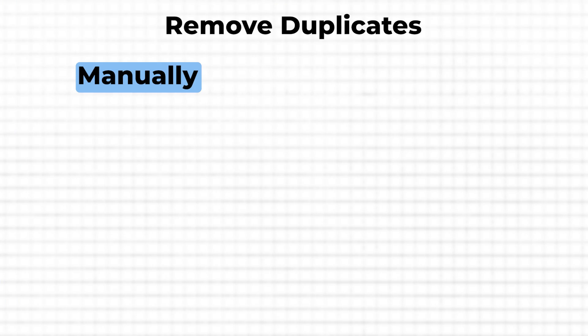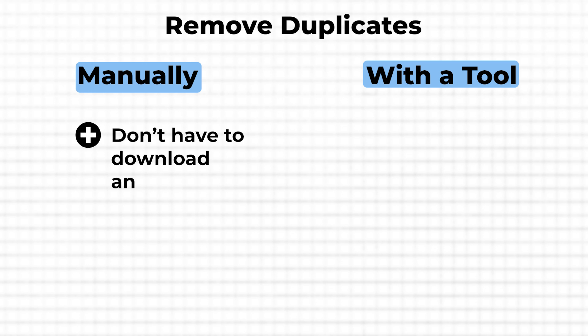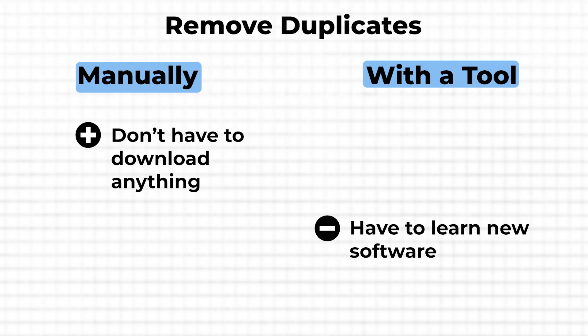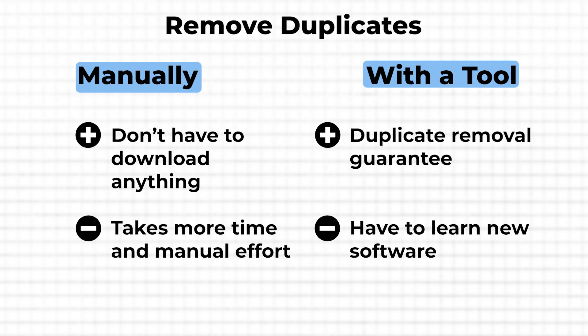To get rid of duplicate photos, there are two options. First, the one without any third-party solution, as I promised in the beginning. Or second, an alternative way that requires third-party software. The manual approach requires no downloads but takes a lot more time and effort. Also, using a tool guarantees that you are removing all duplicates, whilst doing everything manually might still leave you with duplicate files because you might not be as accurate as a tool.